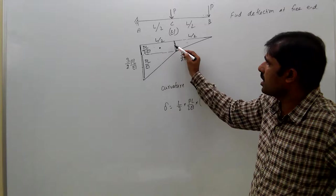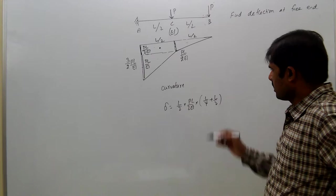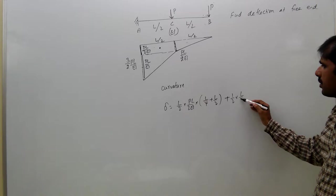This triangle, that means this right triangle, is half into L/2, width, and height is PL/EI, and centroid is here to here, 2/3 of L/2 plus this L/2.